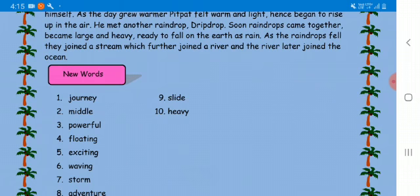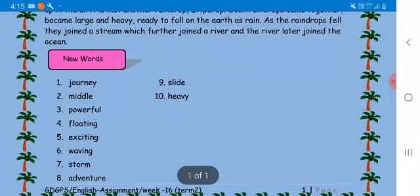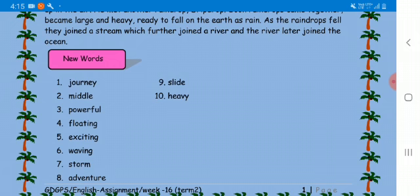Soon, many drops came together and became large and heavy, ready to fall on earth as rain. As the raindrops fell, they joined a stream which further joined a river, and the river later joined the ocean.